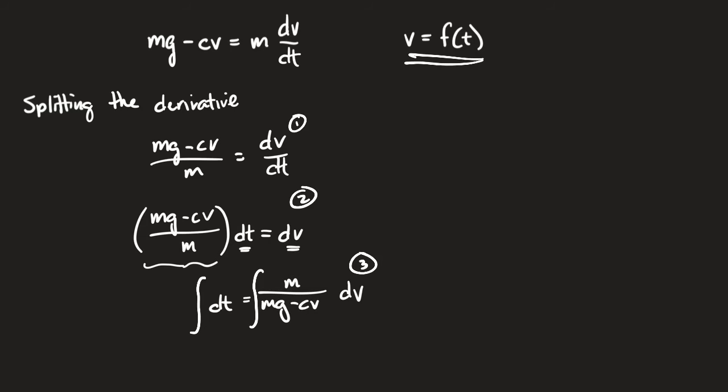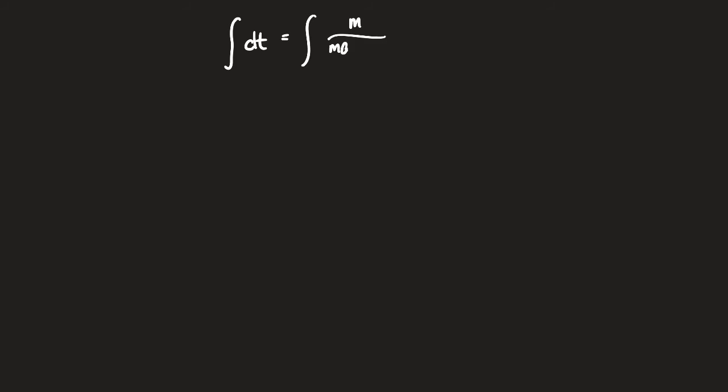That's what splitting the derivative means. Here's the key point — everyone could get to this point using only algebra plus the integral signs on both sides. However, it's at this moment where BC calculus students are in a better position than AB students, because they've learned u-substitution. It is very likely that you will get to a point where you will need to use u-sub to finish your problem.